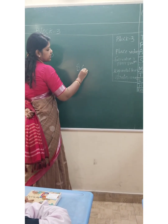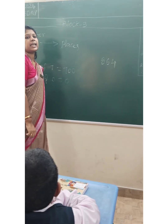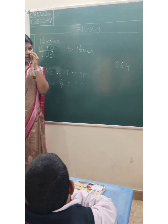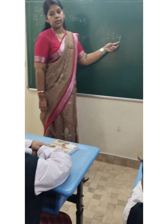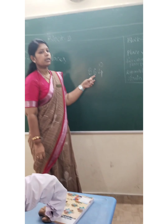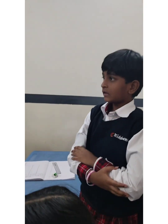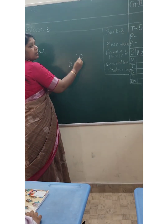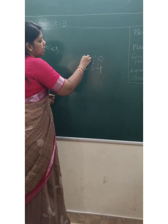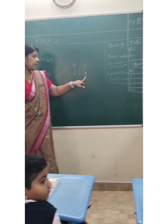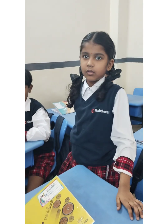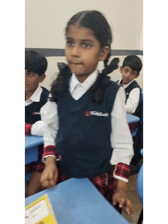Now I am writing the number eight hundred and sixty-four. I want Rani to say — four is in which place? One's place. Very good. Raffi, six is in which place? Ten's place. Chetan, eight is in which place? Hundred's place. Now Adya, what is the value of four here? Four. Very good — value of four is four.